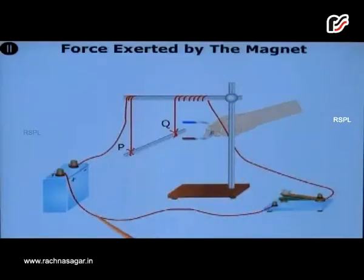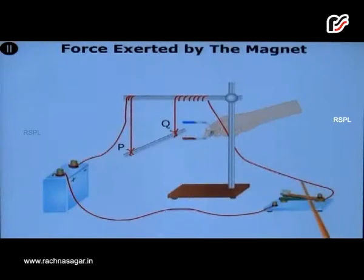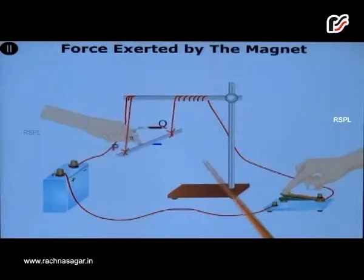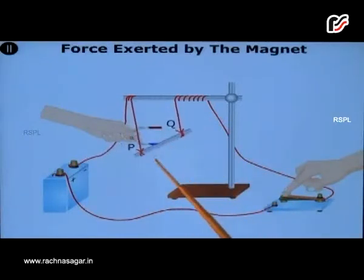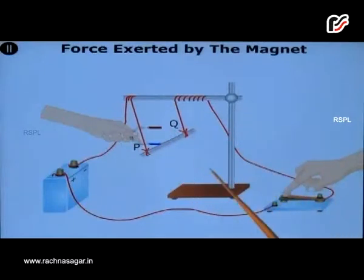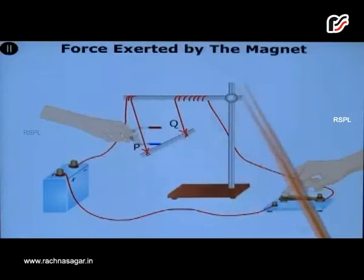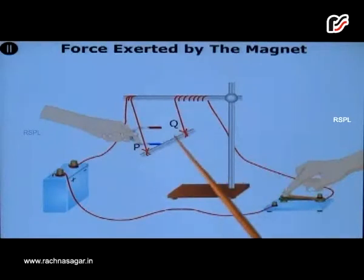The diagram shown here is a setup of an activity. An aluminium rod is connected in series with a battery, and a horseshoe magnet is placed such that the aluminium rod is between its north and south poles. When we switch on the key so that current starts flowing, we observe that the aluminium rod gets displaced. If we change the direction of the current or the poles of the magnet, the direction of the displacement of the aluminium rod also changes. This means that the force experienced by the aluminium rod depends on both the magnitude and direction of the current and the magnetic field.